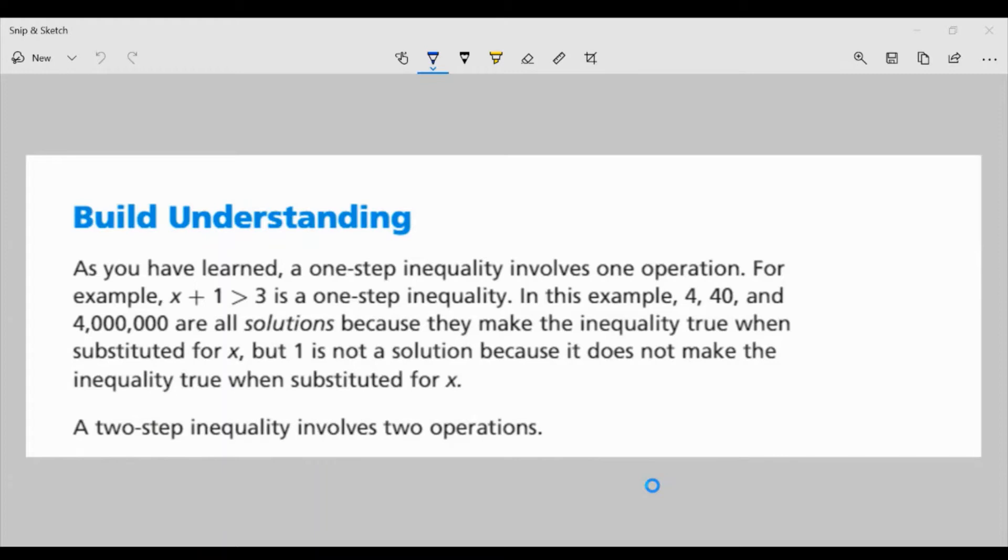Let's look at the Build Understanding. As you have learned, a one-step inequality involves one operation. For example, x plus 1 is greater than 3 is a one-step inequality. In this example, 4, 40, and 4 million are all solutions because they make the inequality true when substituted for x. But 1 is not a solution because it does not make the inequality true when substituted for x.